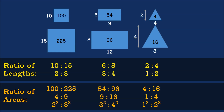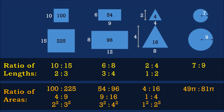Still not convinced? Let's try circles. We have a circle of radius 7cm and a similar circle of radius 9cm. The ratio of the radii would be 7 is to 9. The ratio of the areas would be 49π is to 81π. Simplifying, we have 49 is to 81, which we can express as perfect squares: 7 squared is to 9 squared. So yes, there is a correlation between the ratio of lengths and the ratio of the areas.